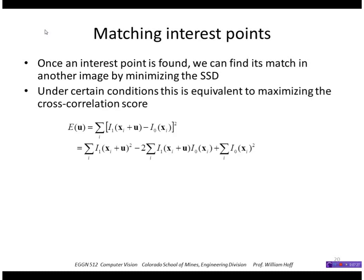Now, in certain conditions, this is equivalent to maximizing the cross-correlation score. So if I take the sum of square differences and just expand this, I get these three sums.